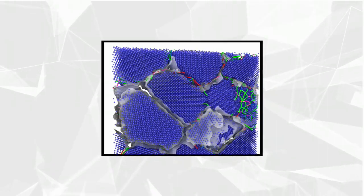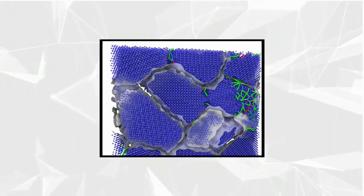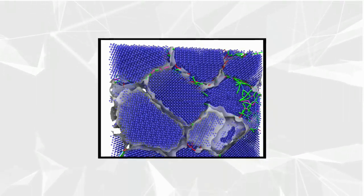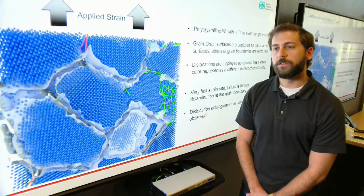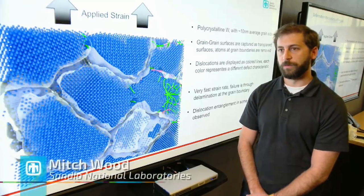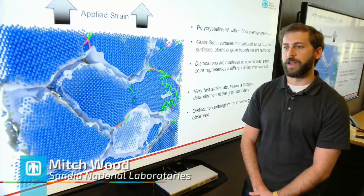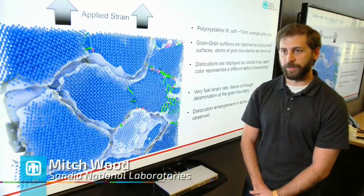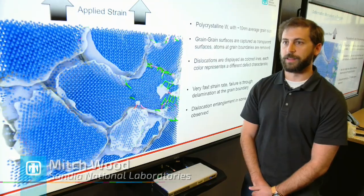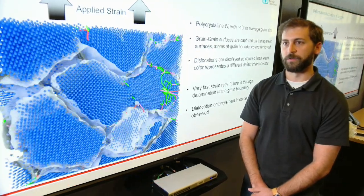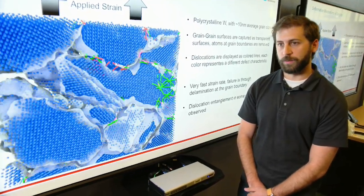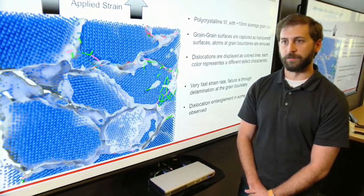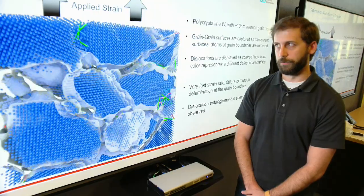We're looking at an all-atom simulation of a material failing. It's not intuitive to understand how a material fails, so something like LAMPS allows us to study in great detail what those failure mechanisms look like in a real material.